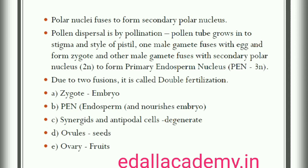The pollen tubes enter the embryo sac where two male gametes are discharged. One of the male gametes fuses with the egg cell to form a zygote (syngamy). The other male gamete fuses with the diploid secondary nucleus to produce the triploid primary endosperm nucleus (PEN). Because of the involvement of two fusions, this event is termed double fertilization — an event unique to angiosperms. The zygote develops into an embryo with one or two cotyledons, and the PEN develops into endosperm which provides nourishment to the developing embryo. The synergids and antipodals degenerate after fertilization. During these events the ovules develop into seeds and the ovaries develop into fruit.